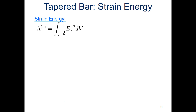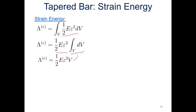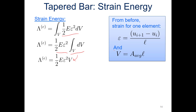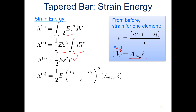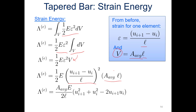The strain energy is one half times the modulus times strain squared, integrated over the volume. Because the modulus is constant, it can be brought out of the integral, and integrating what's left just gives the volume. Substituting for strain — the change in displacement of the nodes on either end divided by the initial length — and for volume using the average cross-section area times the element length, and carrying out the squared function, we arrive at the strain energy expression for a single element.